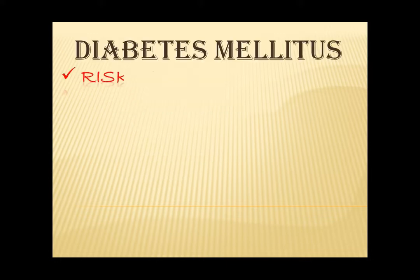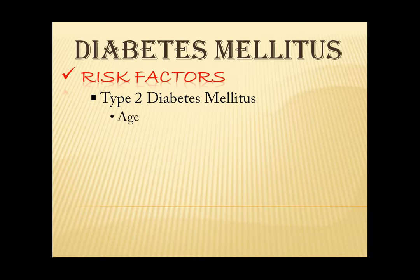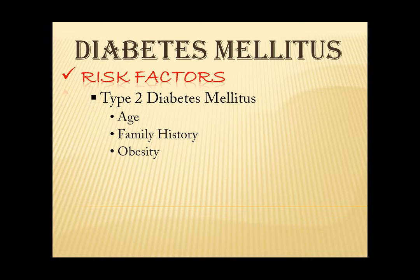For Type 2 diabetes mellitus, we have age — the risk will increase as the person gets older and it is most common to occur at over 40 years of age. Next is family history — having a parent or a sibling with diabetes will make a person a risk. Next, Obesity — this makes your cells in the body resistant to the effects of the insulin to the glucose. Sedentary Lifestyle — the less active you are, the greater risk of having Type 2 diabetes. Physical activity will facilitate the use of glucose as energy and it makes your cells more sensitive to insulin.